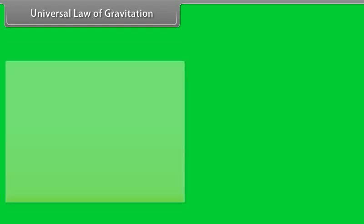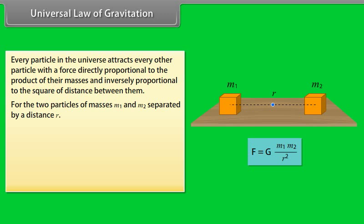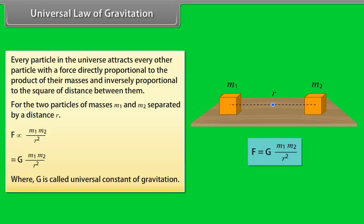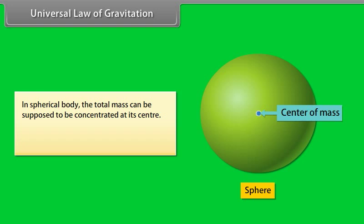Universal law of gravitation. According to Newton's law of gravitation, every particle in the universe attracts every other particle with a force directly proportional to the product of their masses and inversely proportional to the square of distance between them. The direction of this force is along the line joining the two particles. For the two particles of masses m1 and m2 separated by a distance r, F is equal to g m1 m2 upon r square. The constant g is called universal constant of gravitation. In spherical body the total mass can be supposed to be concentrated at its center. For bodies of the other shapes the distribution of mass needs to be considered.